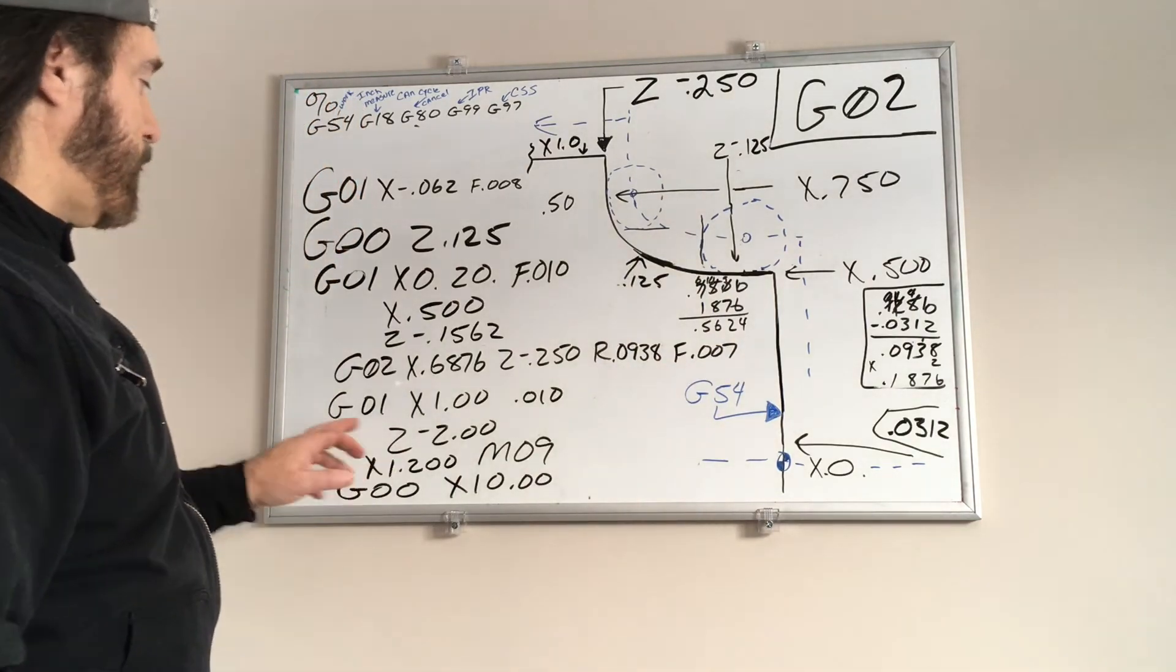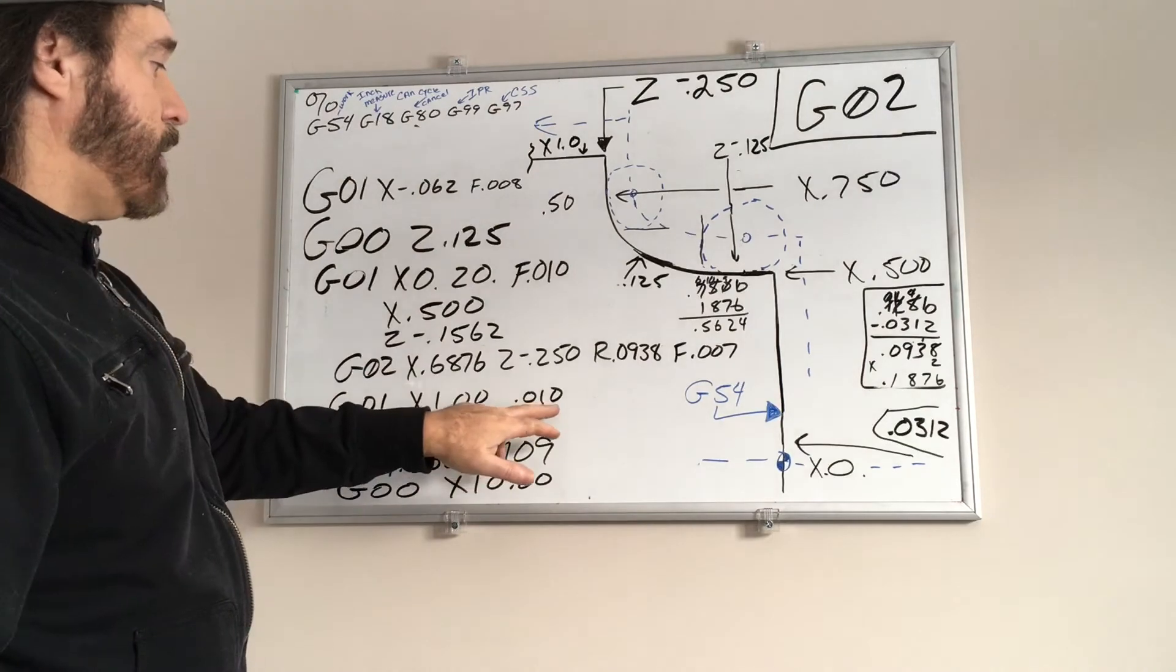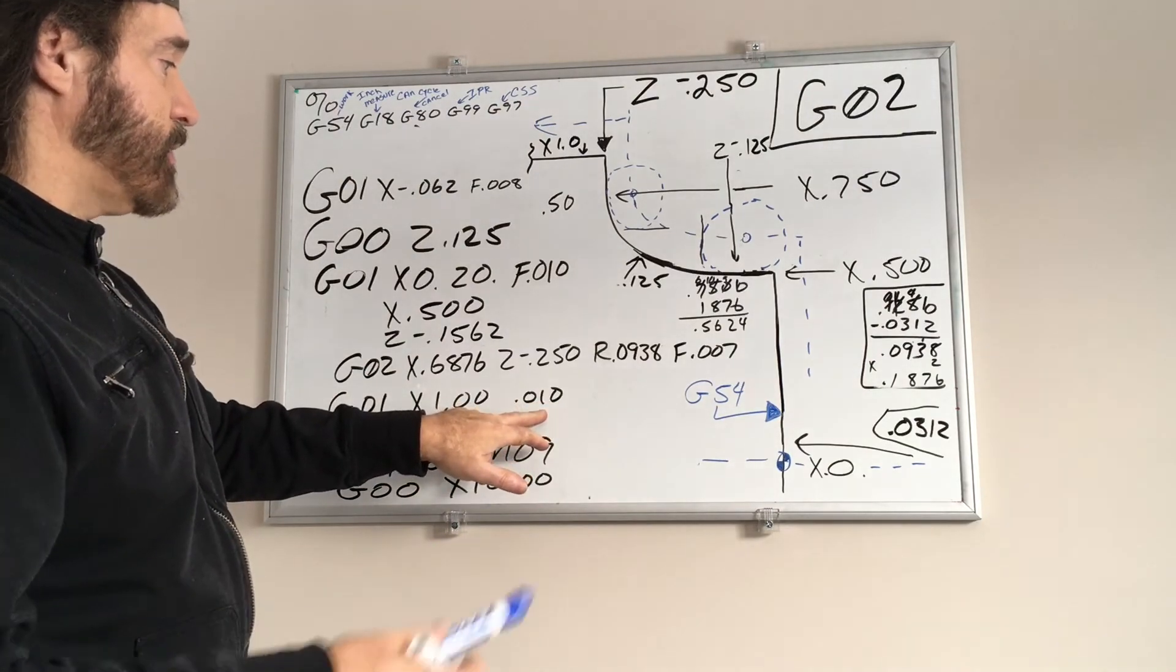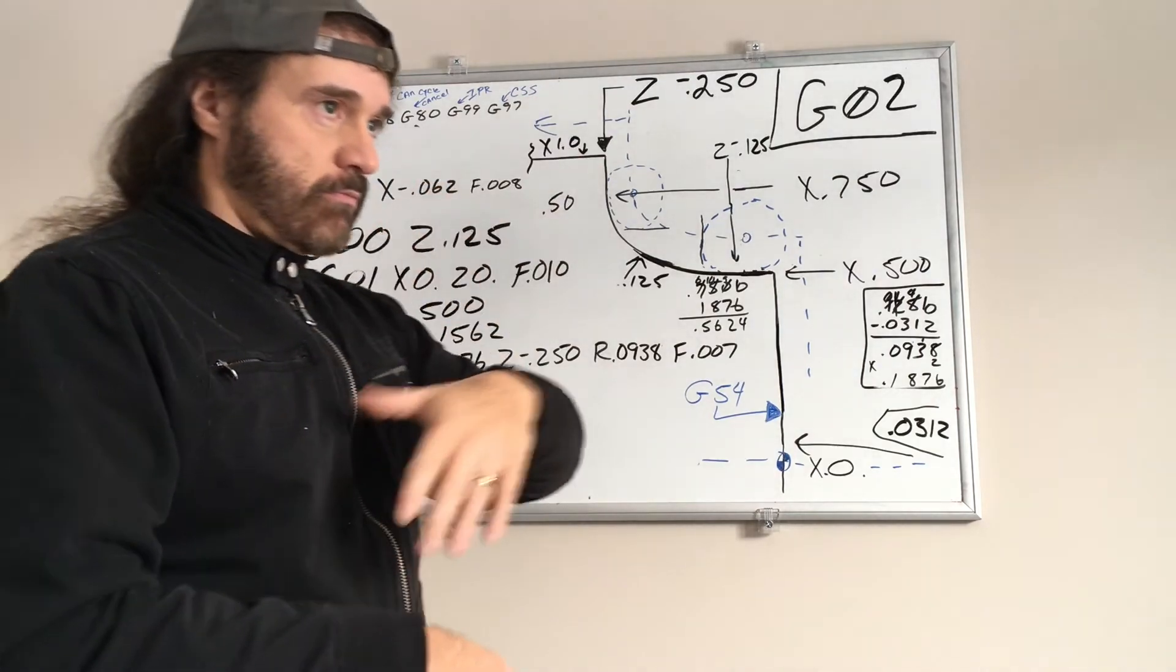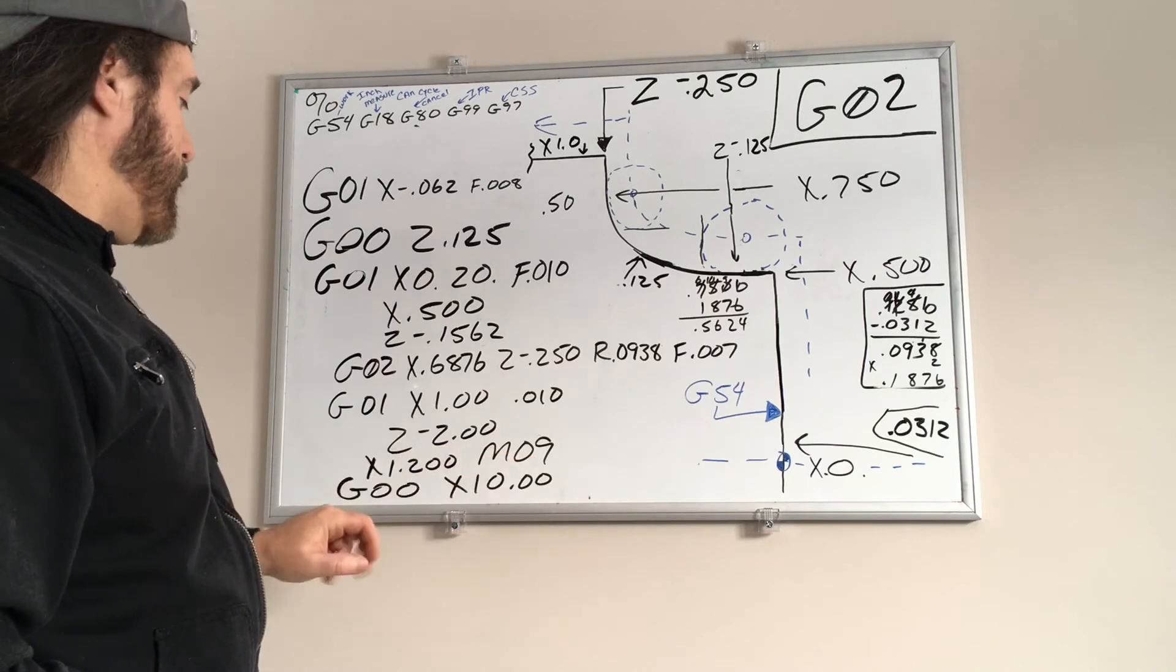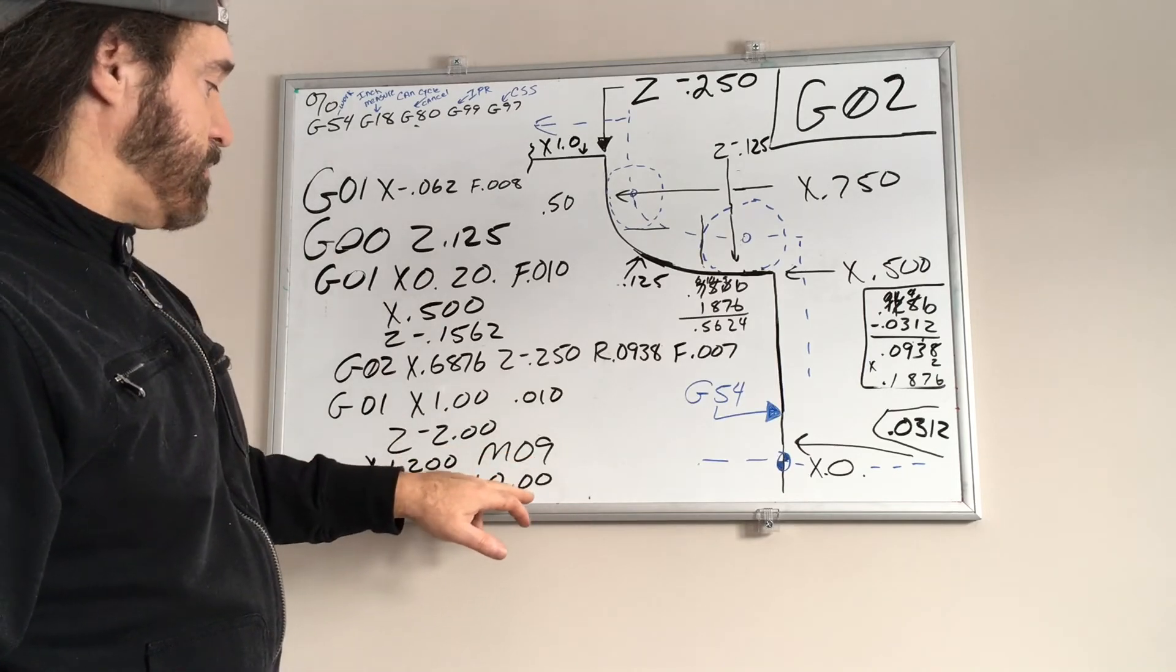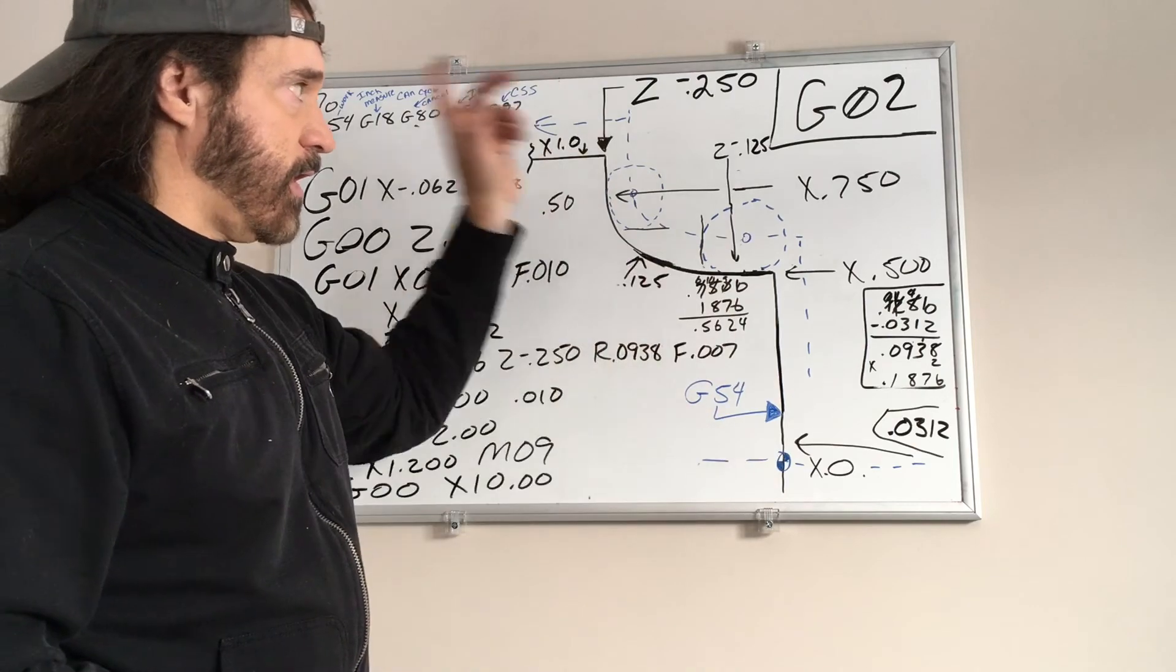And we're going to feed up to X one point zero, increase the feed rate to ten thousandths per revolution. And we'll go Z negative 2.0. Then we'll feed off the part, turn off the coolant, and then we'll rapid up X ten point zero, which is ten inches from spindle centerline. And then we'll send it home and call it done.